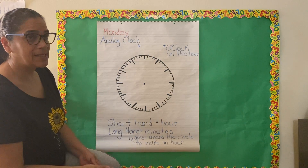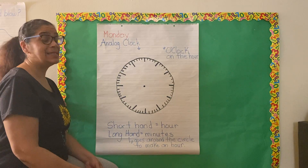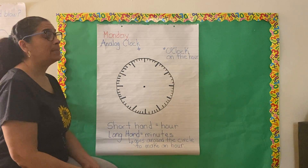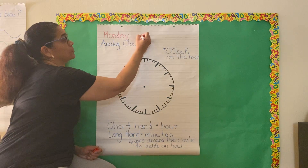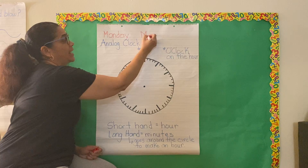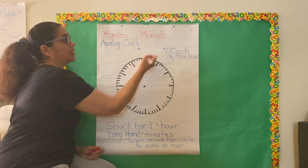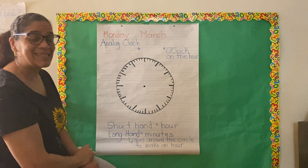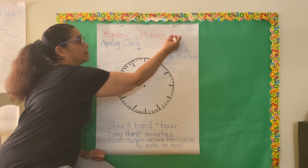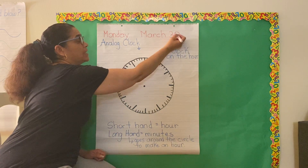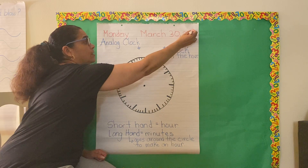You can take the time to sing your days of the week song that I know we all love. So today's day is Monday, but today's date is March — that's the name of the month we are currently in. And the date, the number of the day in March, is 30. And the year is 2020.